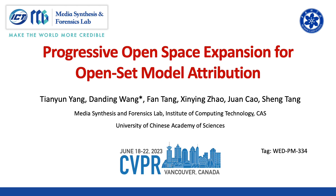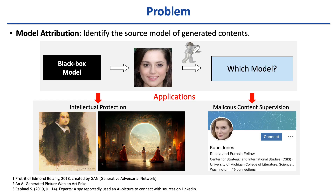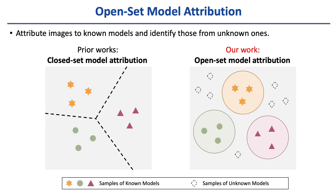Hello. The paper I am presenting is Progressive Open Space Expansion for Open Set Model Attribution. In this paper, we aim to solve the problem of model attribution, which means identifying the source model of generated contents. Existing works are limited to closed set model attribution and cannot handle unknown models. In our work, we propose to solve open set model attribution to attribute images to known models and identify those from unknown ones.